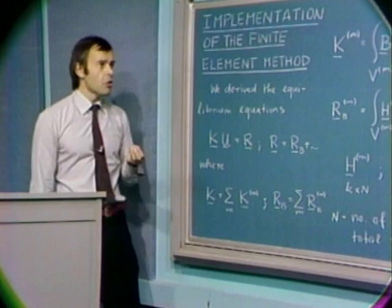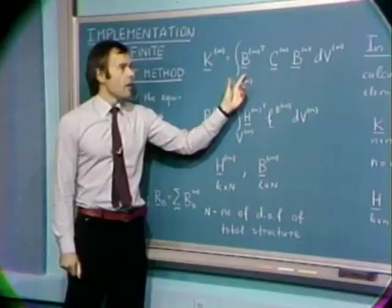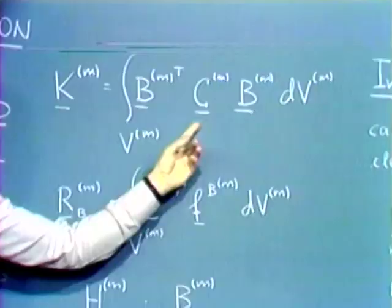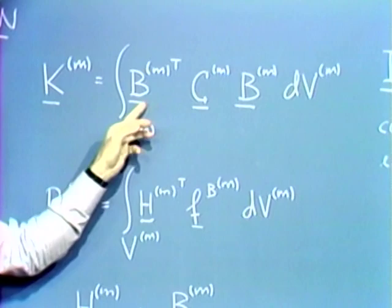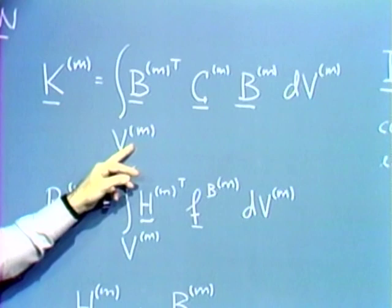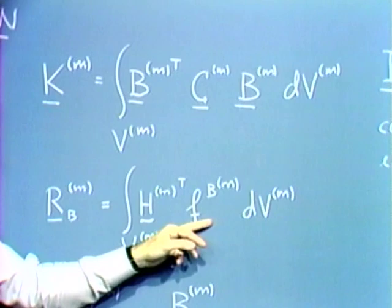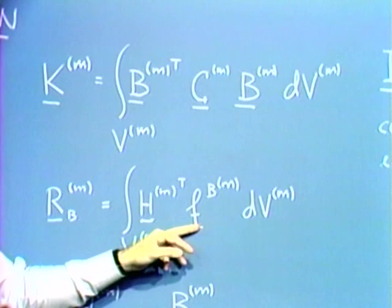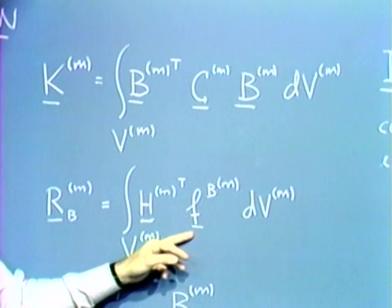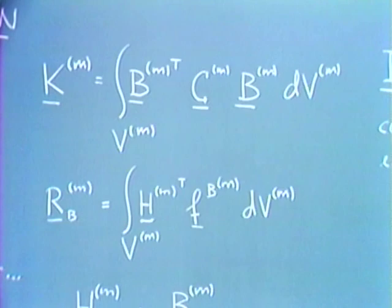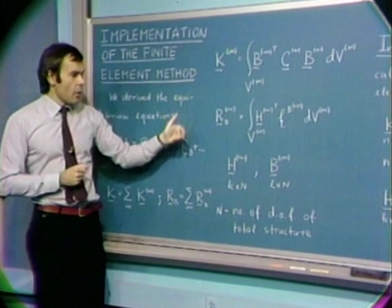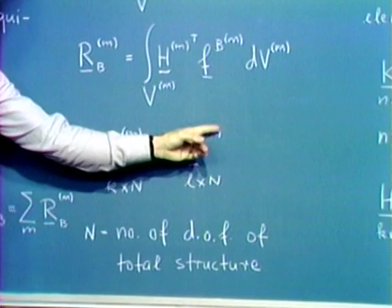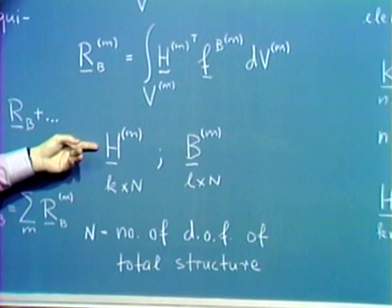The stiffness matrix of a typical element m is obtained via this relationship. In this integral, B_m is the strain-displacement transformation matrix, C_m is the stress-strain law, and we integrate B_m transpose times C_m times B_m over the total volume of the element. The R_b vector for element m involves the body loads f_b per unit volume, with H_m being the displacement interpolation matrix. The B_m matrix is obtained from the H_m matrix by appropriate differentiations.